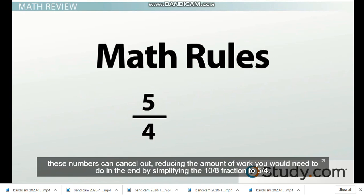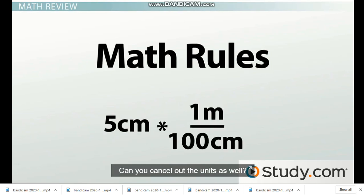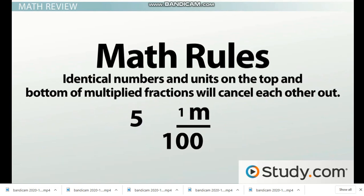But what if you have something like 5 centimeters times 1 meter over 100 centimeters? Can you cancel out the units as well? Yes. Identical numbers and units on the top and the bottom of multiplied fractions will cancel each other out.